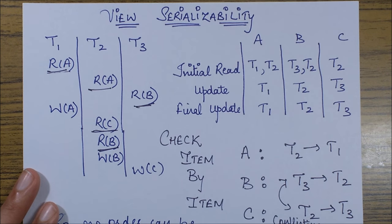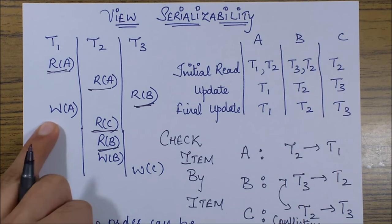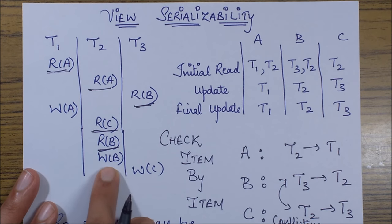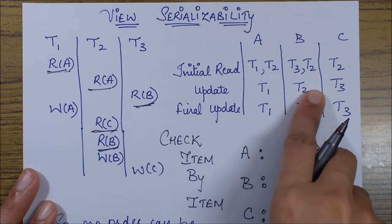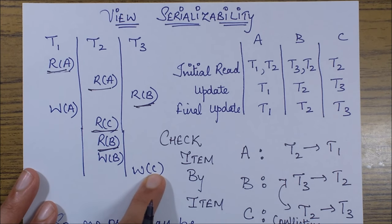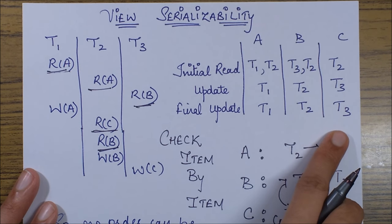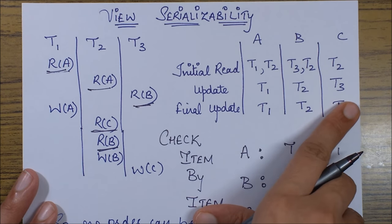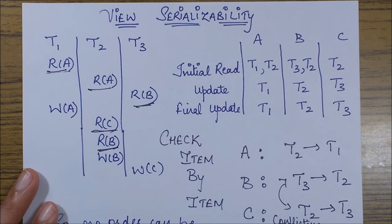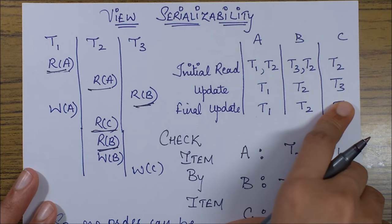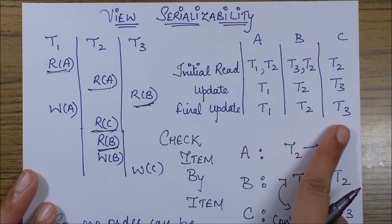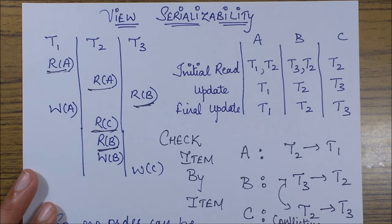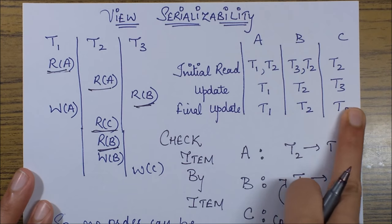Now we check the update operation, which is essentially a write operation. For data item A, only T1 has a Write A, so only T1 updates it. For B, only T2 has a Write B, so only T2 updates it. For C, only T3 has a Write C, so only T3 updates it. Since these are the only transactions updating each data item, the final update is also the same: T1 for A, T2 for B, and T3 for C.